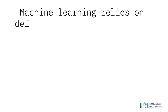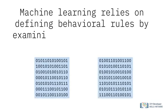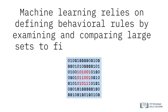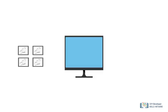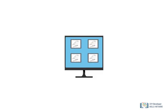Machine learning relies on defining behavioral rules by examining and comparing large datasets to find common patterns. For instance, we can provide a machine learning program with a large volume of pictures of birds and train the model to return the label bird whenever it is provided a picture of a bird. We can also create a label for cat and provide pictures of cats to train on. When the machine model is shown a picture of a cat or a bird, it will label the picture with some level of confidence.